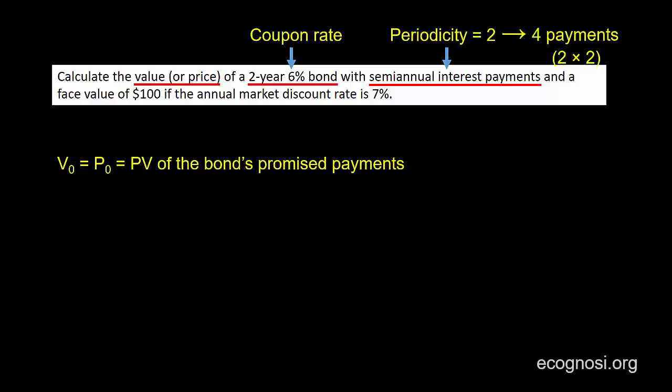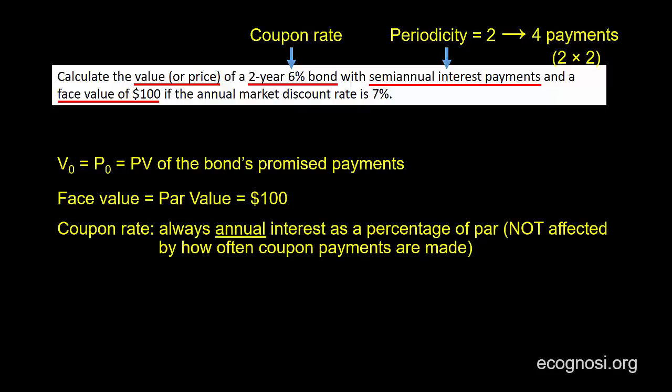The bond has a face value of $100, and this is the same as the par value. Now that we know this, let's calculate the coupon payments. The coupon rate is always by convention the annual interest as a percentage of par, and this is not affected by the periodicity or frequency of coupon payments, that is by how often coupon payments are made.